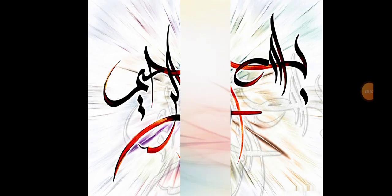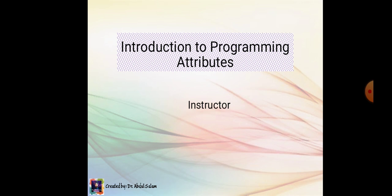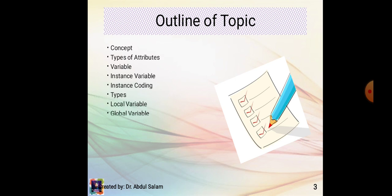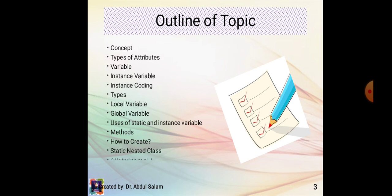Bismillahirrahmanirrahim. Assalamu alaikum friends. The topic for today's lecture is introduction to programming attributes. The points we will discuss are: the concept of the topic, types of attributes, variable, instance variable, instance coding, types of local variable, global variables, uses of static and instance variables, some methods, how to create static nested class attributes in C++, and then syntax.